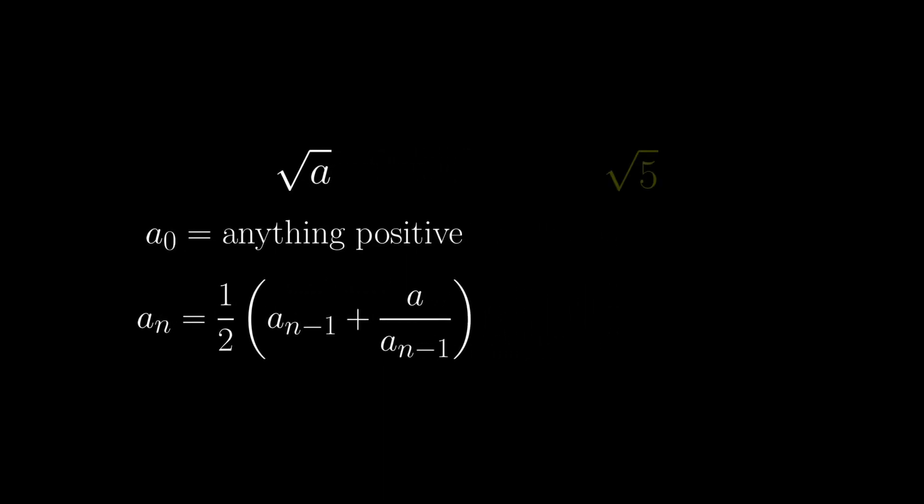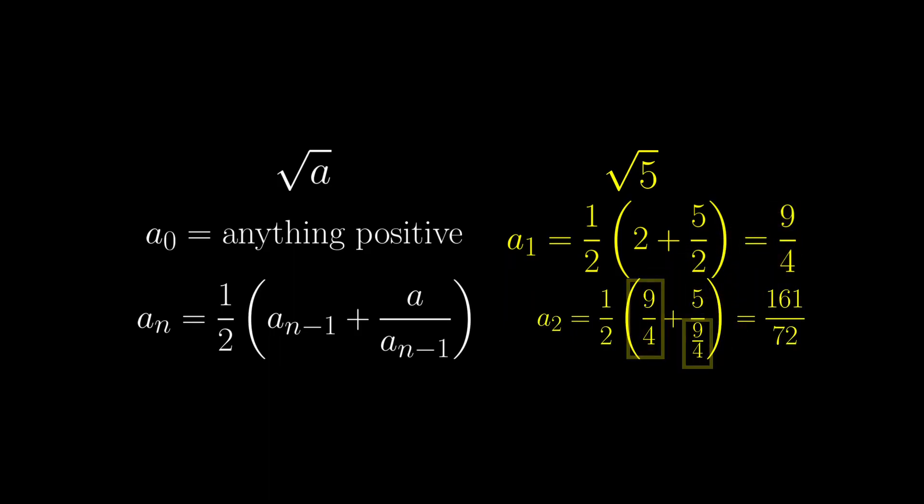Let's say we want to approximate the square root of 5. Then we first take a reasonable guess of 2, then take the average of 2 and 5 over 2 to get 9 over 4. Then take the average of 9 over 4 and 5 over 9 over 4 to get a 2.